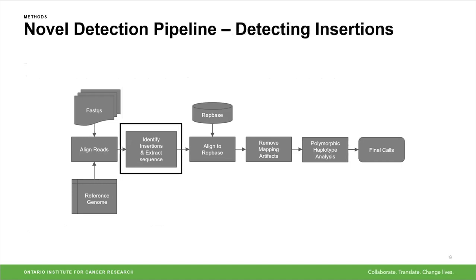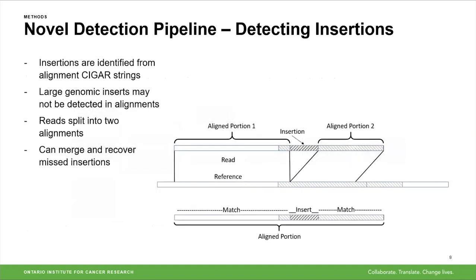Once we've aligned reads to the reference, we parse these alignments to identify which reads actually support an insertion. The insertions themselves are identified from alignment CIGAR strings, where we extract the sequences of any insertion greater than 100 base pairs on a read with an alignment mapping quality of at least 20.